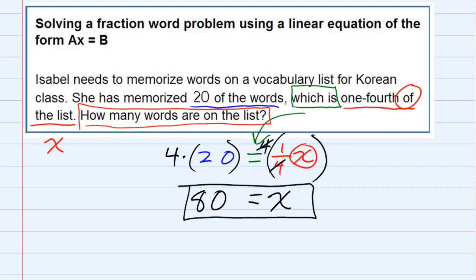So my answer is x equals 80. And one thing I like to do is ask myself, does it make sense? If she has memorized 20 of the words and that's one fourth of the list, does it make sense that the list is 80 words? Yes, so there's our answer.